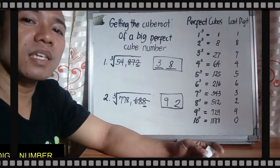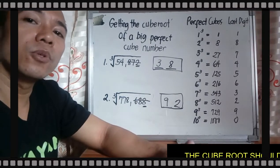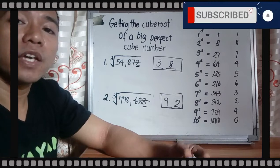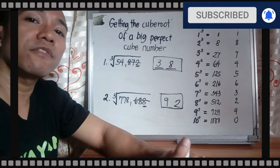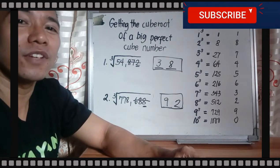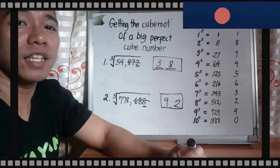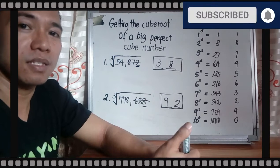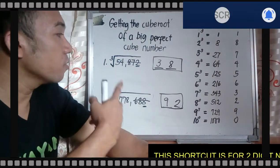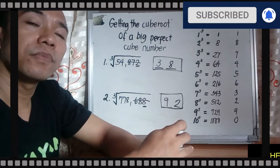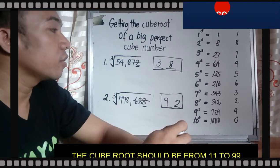So it's very easy to get the cube root of a big perfect cube number. It should be perfect. You cannot get the cube root of a non-perfect cube number. You need to simplify then factor out if that is the case. But here, those two are perfect, so we can get the cube root, which is a whole number.